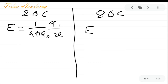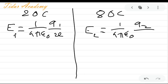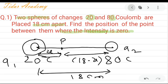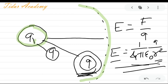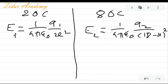We define this as E1 (electric field intensity due to 20 coulomb charge) and E2 (due to 80 coulomb charge). E1 equals 1 upon 4 pi epsilon 0 times q1 divided by x square, and E2 equals 1 upon 4 pi epsilon 0 times q2 divided by (18 minus x) square. At the point where electric field intensity is zero, E1 equals E2.